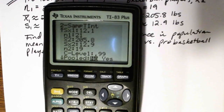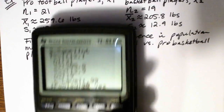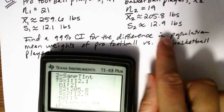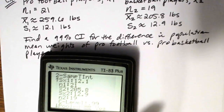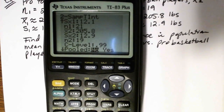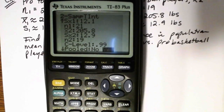The calculator will also ask about pooling. Generally it is safer not to pool, but pooling makes sense when your sigmas — or here, your sample standard deviations — are close to one another. Here we have s1 = 12.1 and s2 = 12.9, which are very close, so it's safe to pool. You can always select No to be conservative, but in this circumstance I'm going to select Yes.